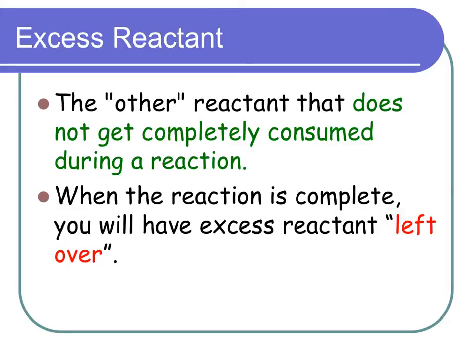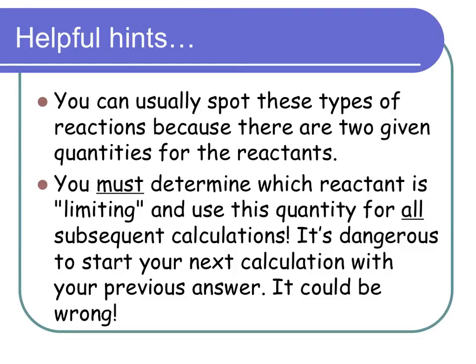How do you spot a limiting reactant problem? Look at Example 1 — it's talking about aluminum and hydrochloric acid, and it gave you two pieces of given information. Anytime you see two givens, you know you're going to have a limiting reactant problem. You must determine which reactant is limiting.